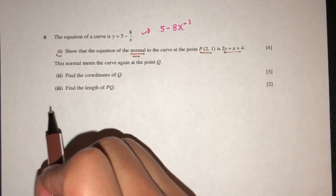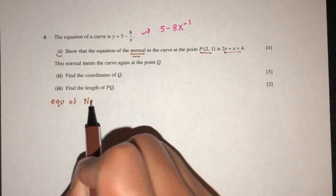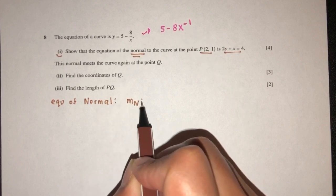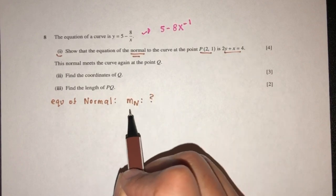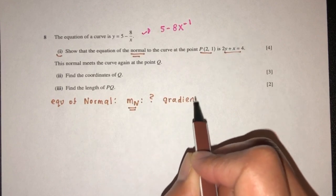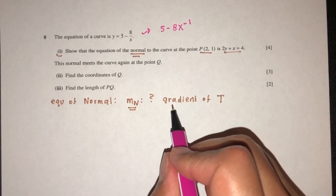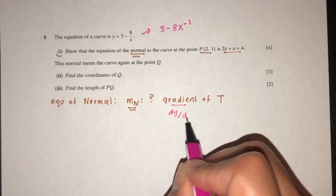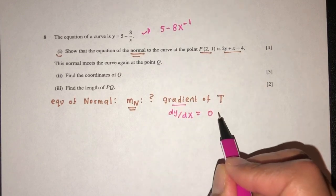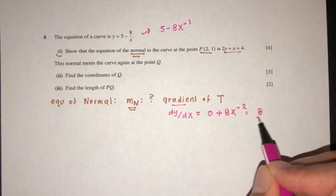So let's find that. To find the equation of the normal, we understand that we have to first find its gradient. To find the gradient of the normal, we have to find the gradient of the tangent first, because that's what we can find first. So this is simply dy/dx. That will be 0 here, then plus 8 times x minus 2, which is 8 over x squared.